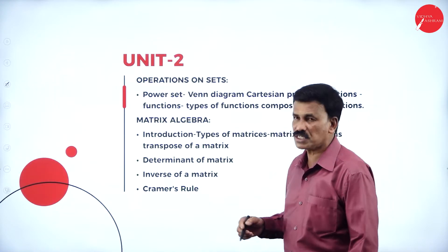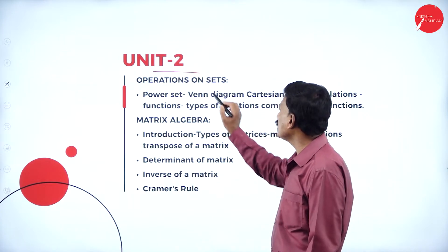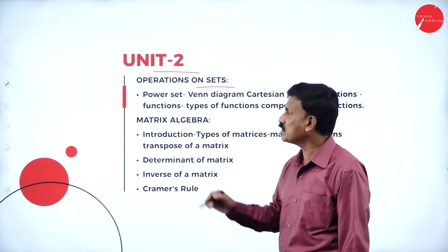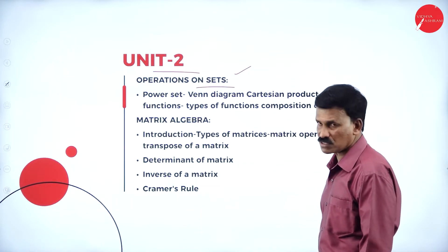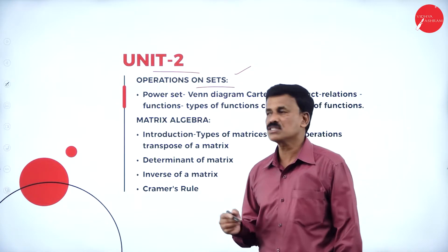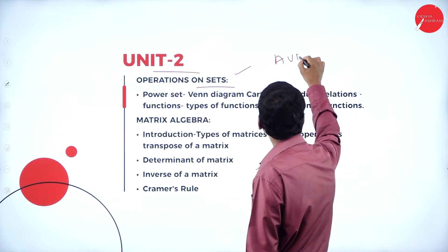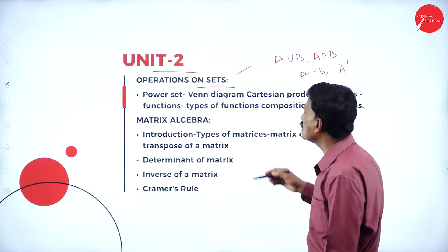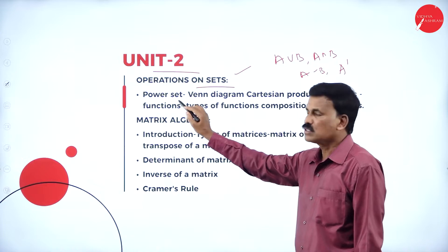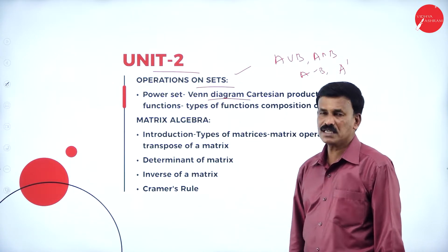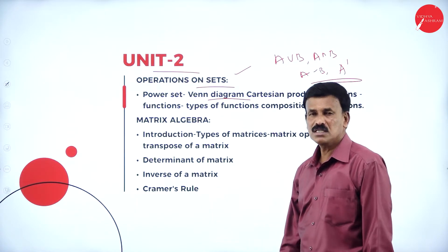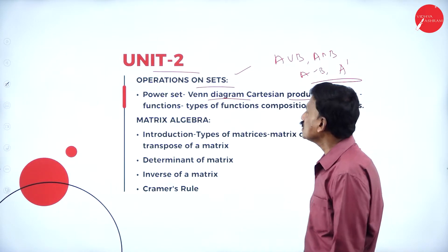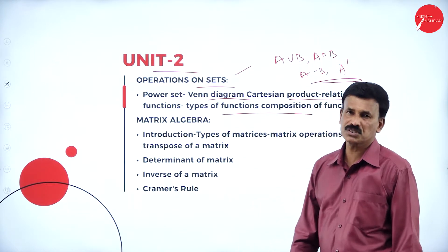Now let us come to unit number 2. In unit 2, we are going to study operations on sets. Whereas in the first unit we studied definitions and types of sets, in the second unit we study operations on sets — union, intersection, difference A minus B, and complement A dash. Then the power set, Venn diagrams representing union, intersection, difference, and complementation, and Cartesian product of relations.